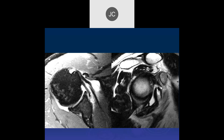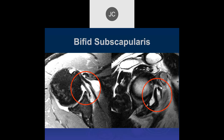There's something wrong with the subscapularis — the myotendinous junction is retracted, involving the upper third of the subscapularis fibers. It looks like there are two tendons there, and this was a bifid subscapularis tendon, which is quite rare.